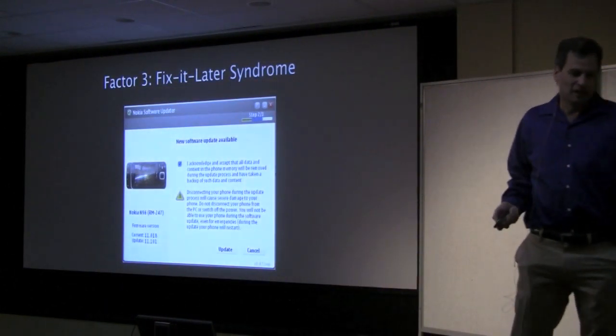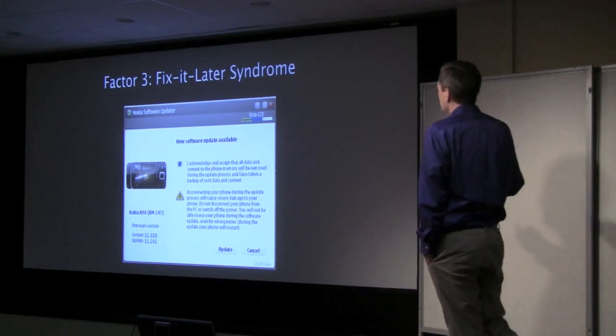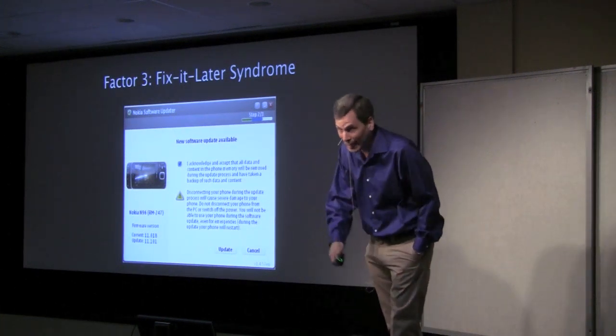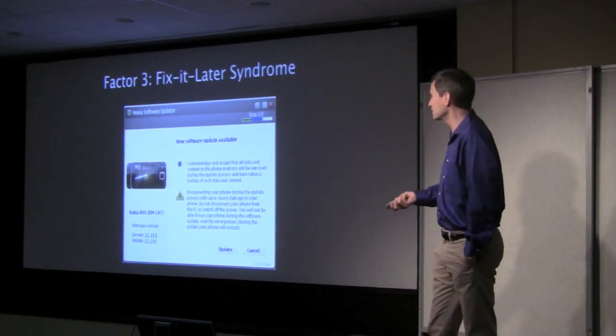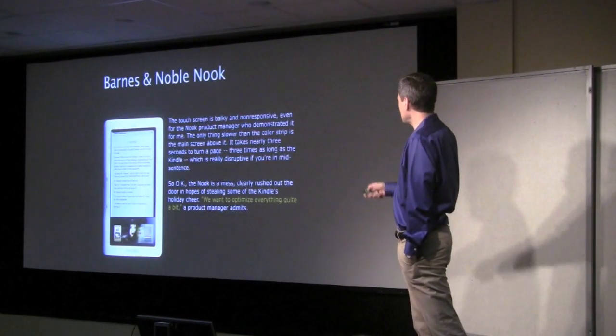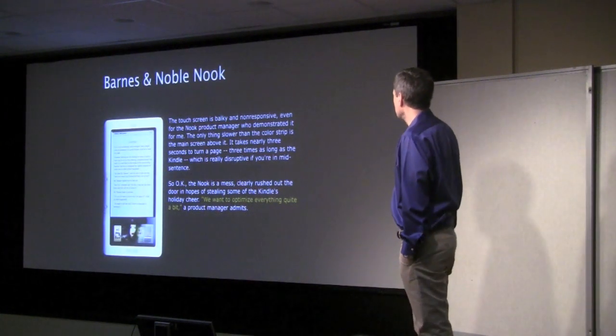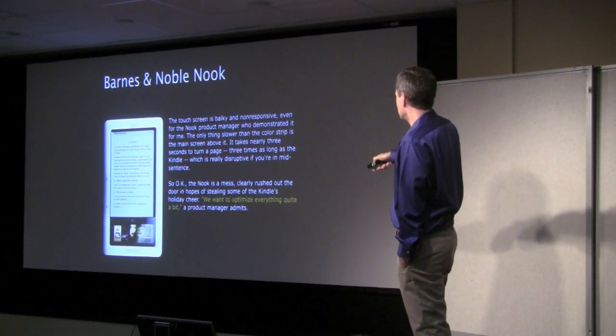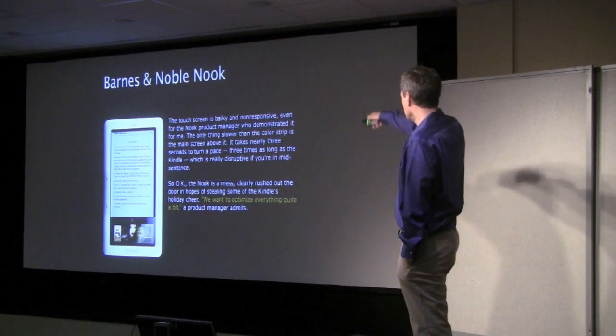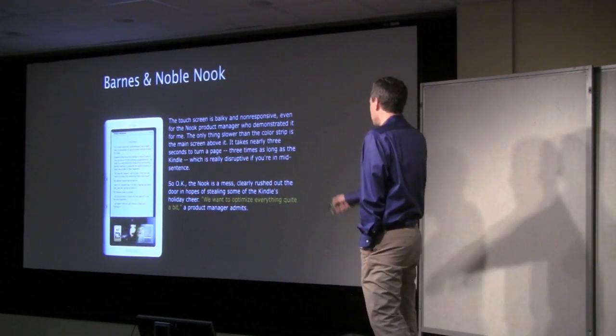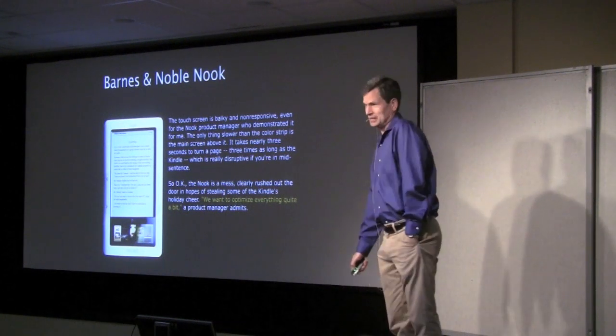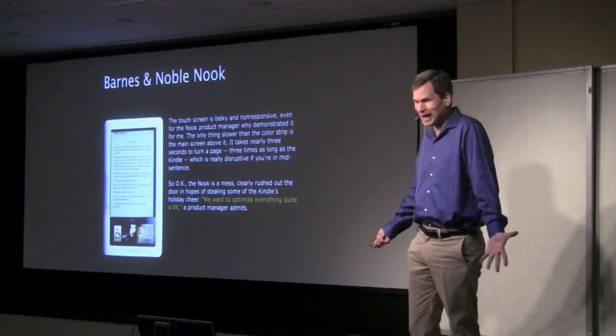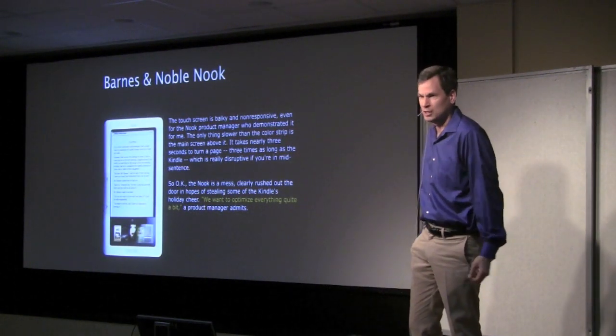Third factor is fix it later. The fix it later syndrome. It came as a stunning shock to me when I learned that people ship these products knowing that there's problems with them and intending that they will simply fix them later. For example, this is the first Barnes & Noble Nook. The screen is balky. It's non-responsive. It takes three seconds to turn a page, which is really disruptive if you're in mid-sentence. This is my review. So yes, it's a mess. Clearly rushed out the door. So I asked them for a comment. They said, yes, we want to optimize everything quite a bit. This is after you shipped it. What about optimizing it before we, guinea pigs, buy your poor products?